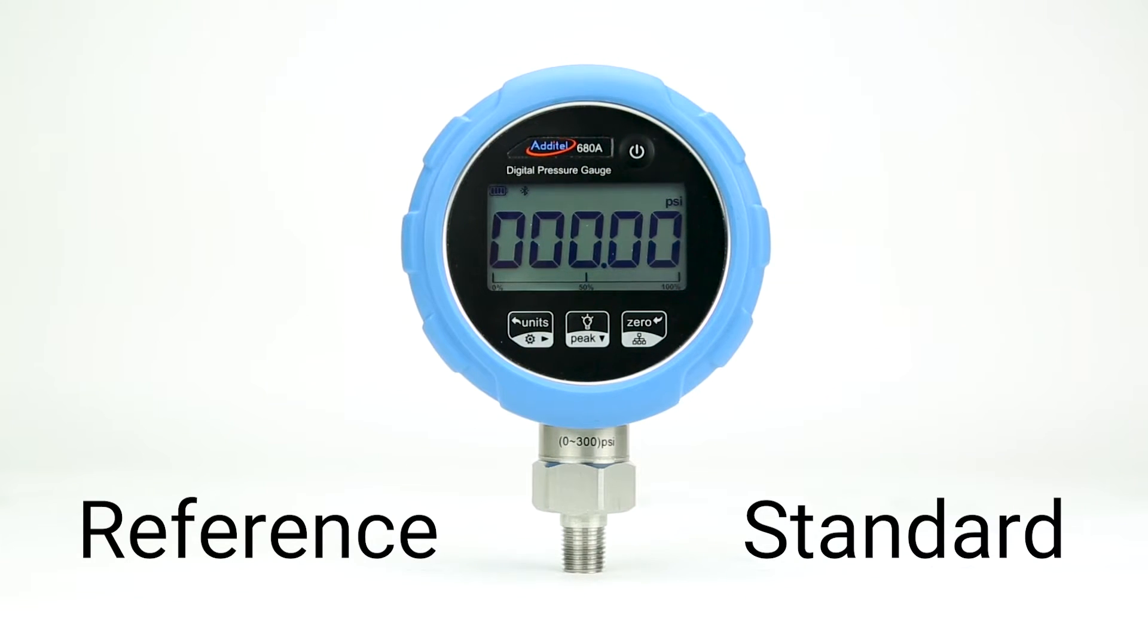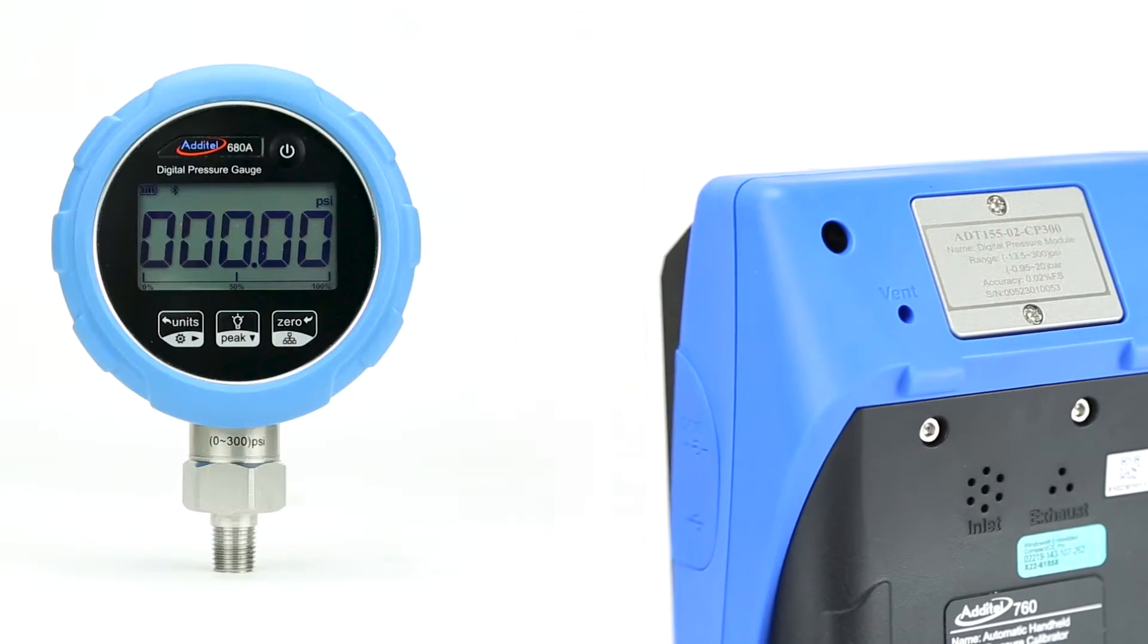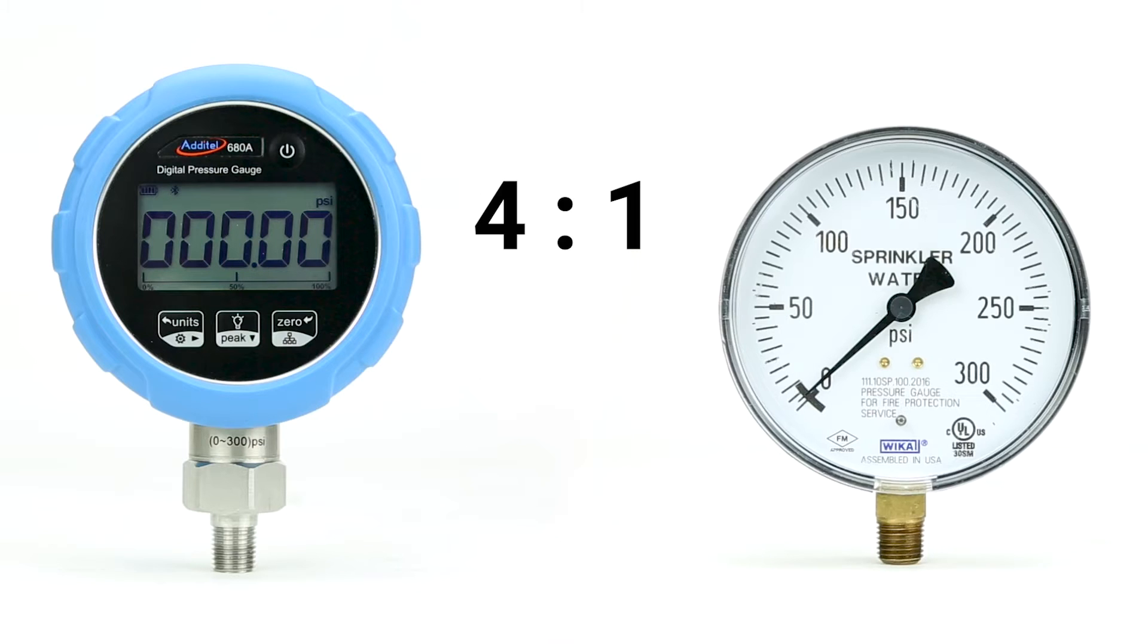This could be another gauge module or even a sensor within the pressure controlling device. A general rule of thumb is to have the reference be at least four times as accurate as the DUT, also known as a 4:1 test accuracy ratio, or sometimes referred to as a test uncertainty ratio.